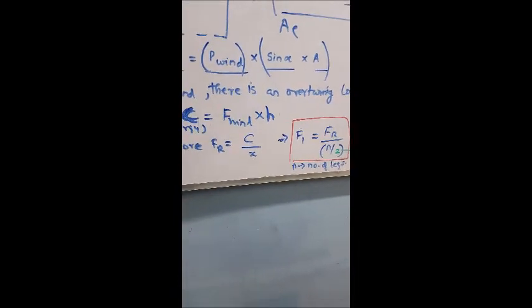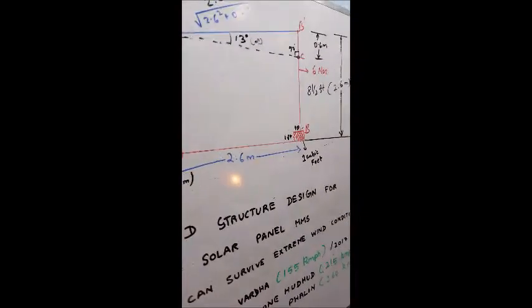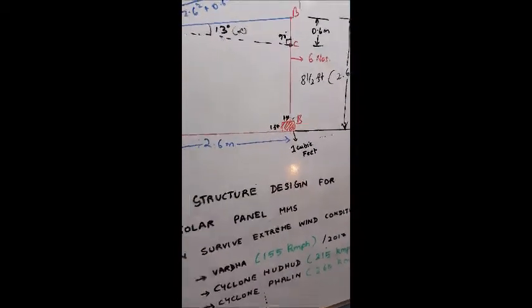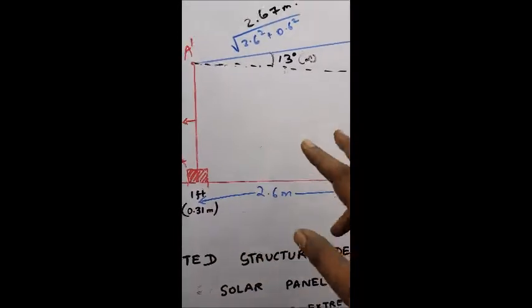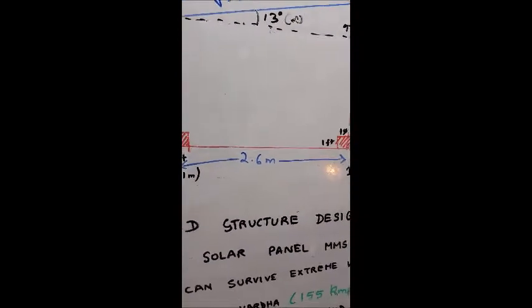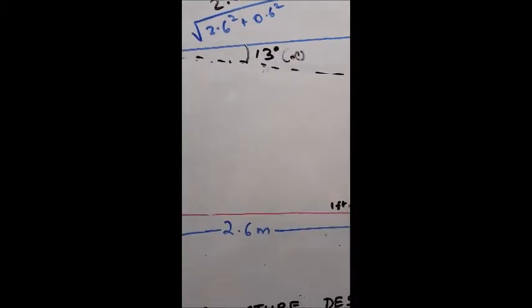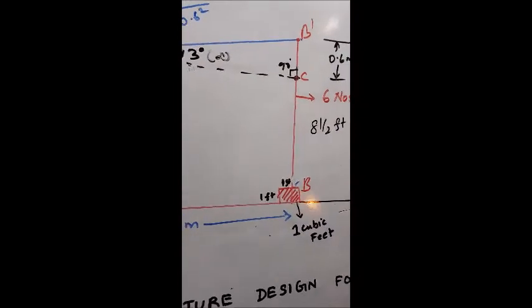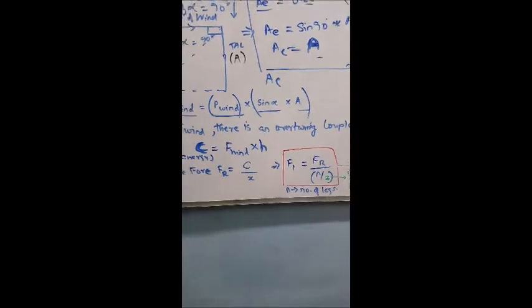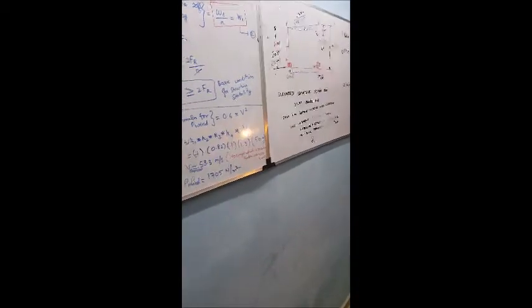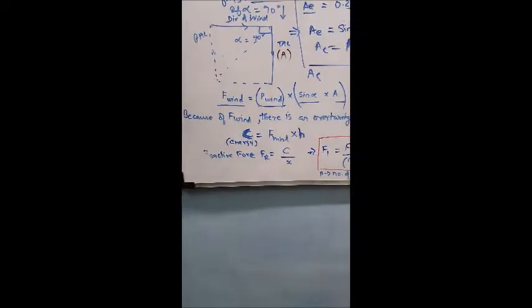The turning couple is defined as the force of the wind times h. Going back to our diagram, I have a leg of 2.6 meters and 2 meters, so the difference is 0.6 meters. However, to be precise with the terminology, h is the distance between the topmost edge and the center of gravity of the structure. I will come back to how to determine h for this structure later.